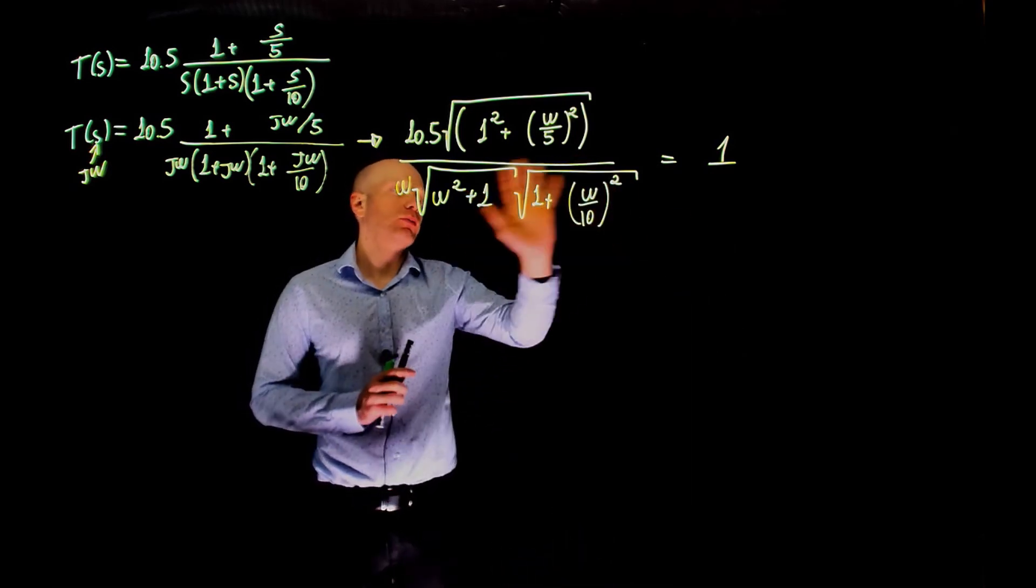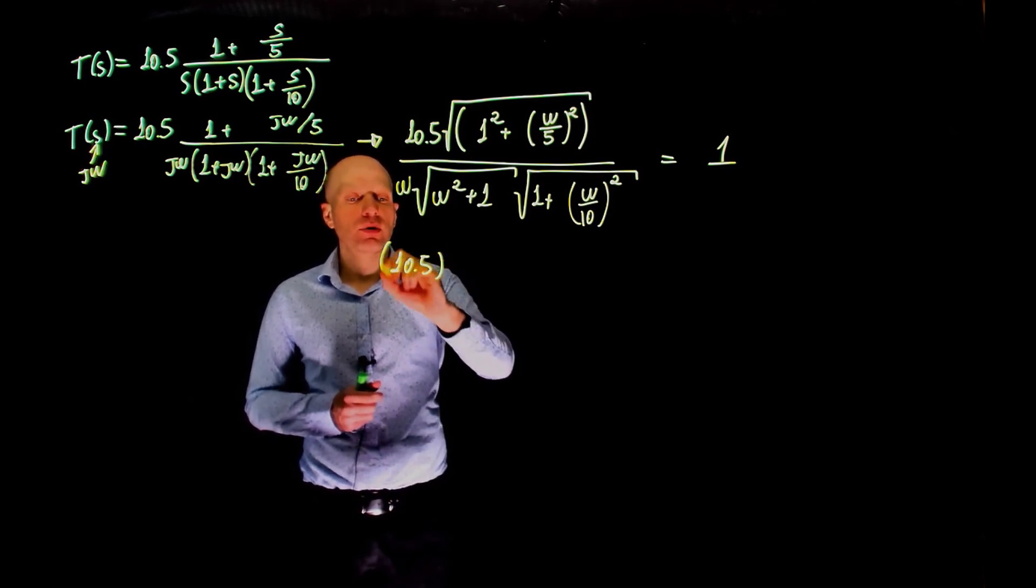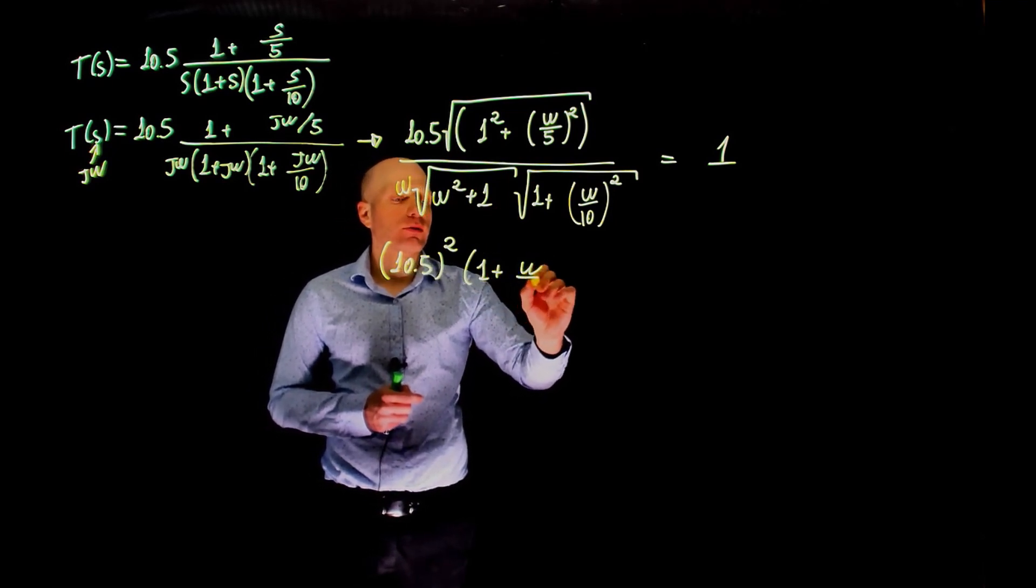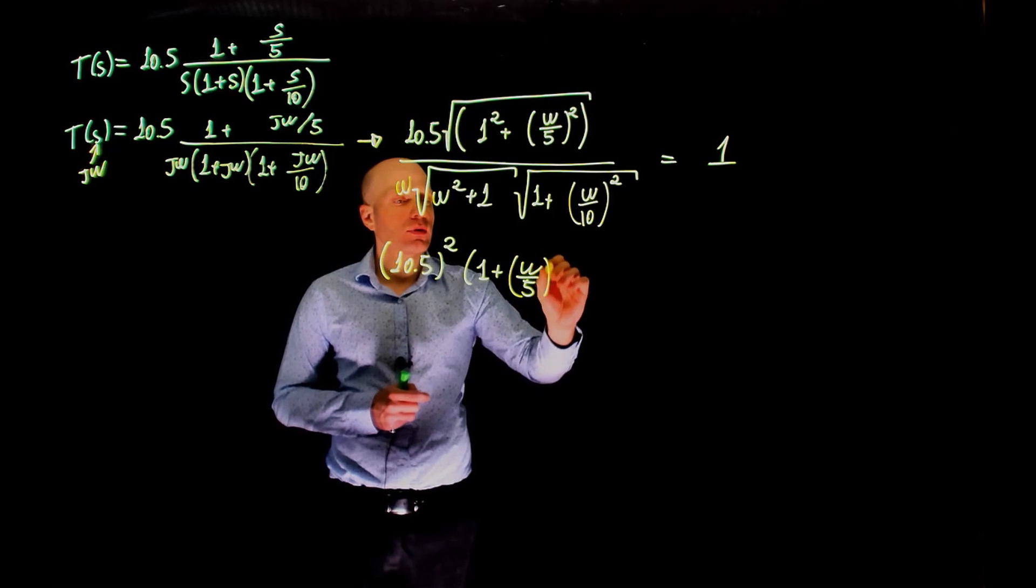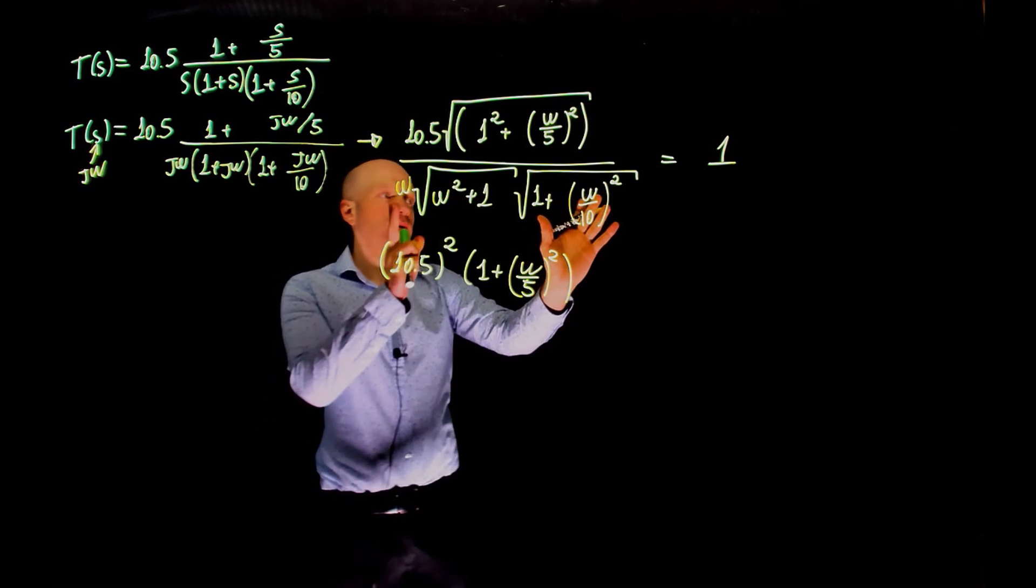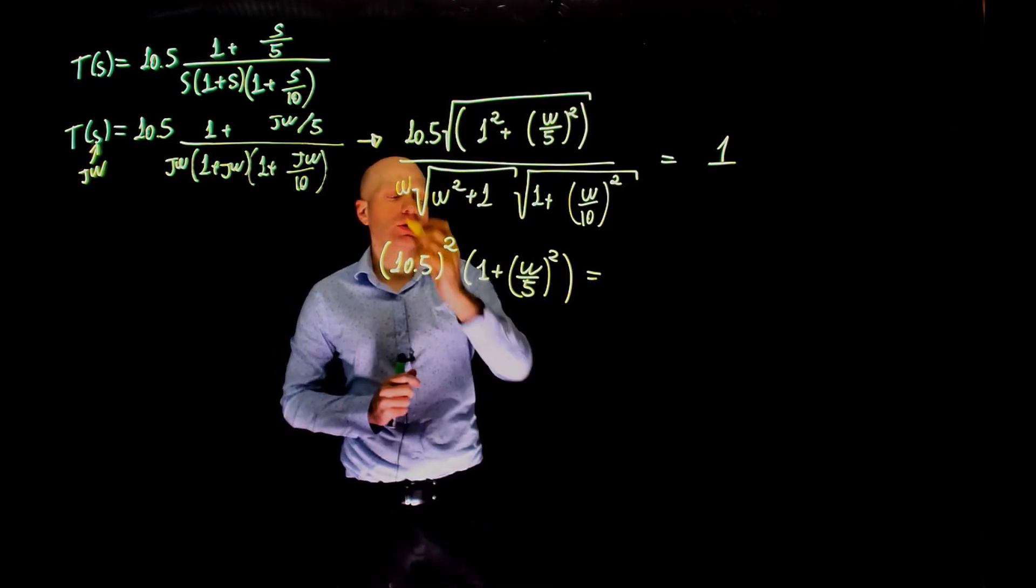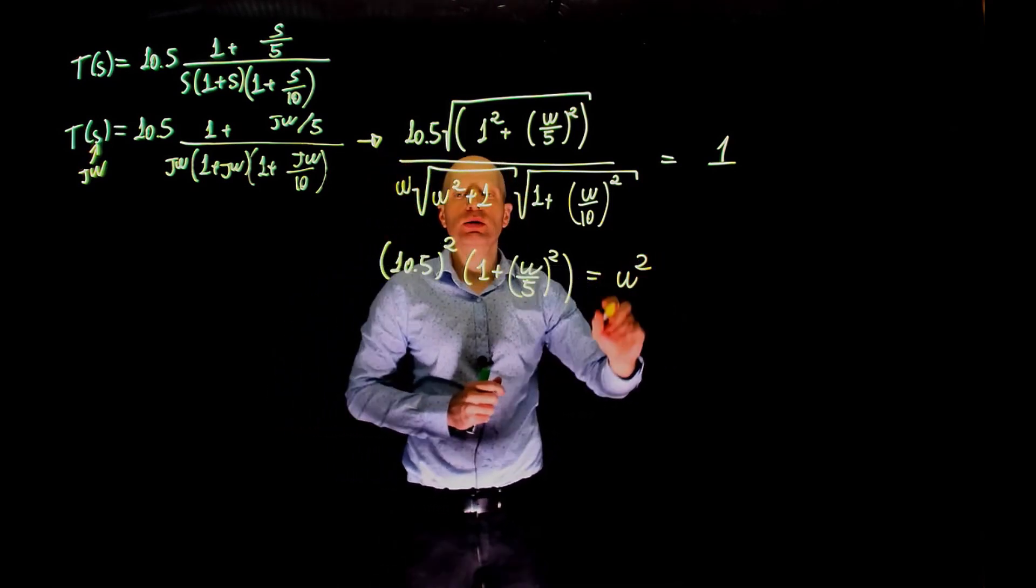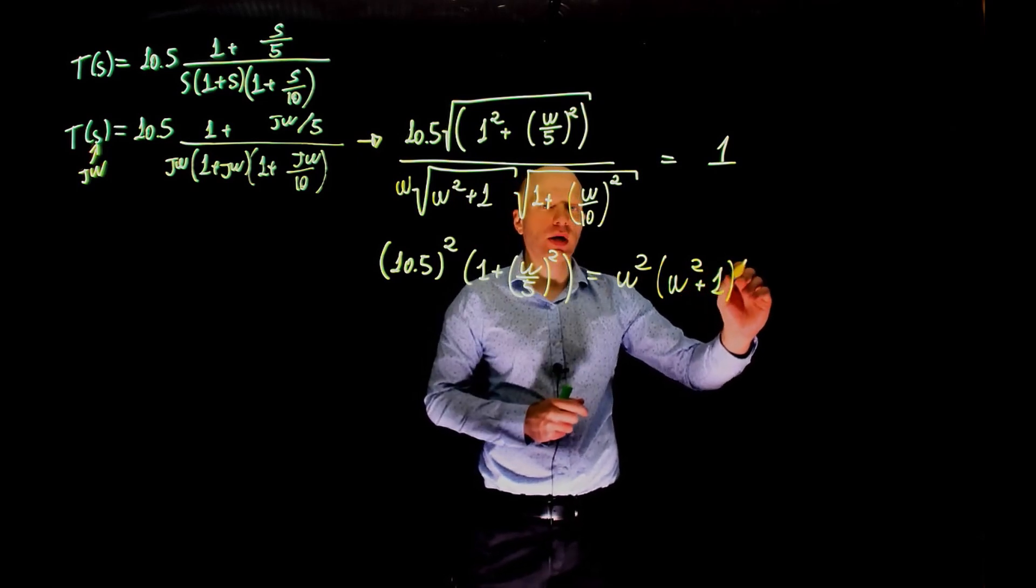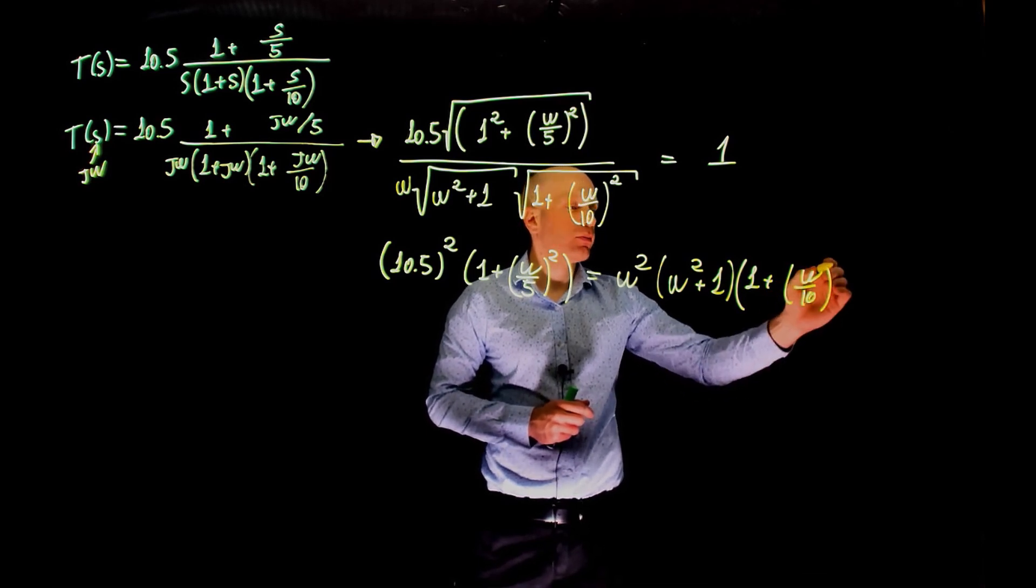We can now take the square of both sides of this equation. We end up with 10.5 squared times (1 plus omega over 5 squared). And you can multiply 1 by the entire denominator here. Remember that we are taking the square of both sides of this expression. So this is omega squared times (omega squared plus 1) times (1 plus omega over 10 squared).